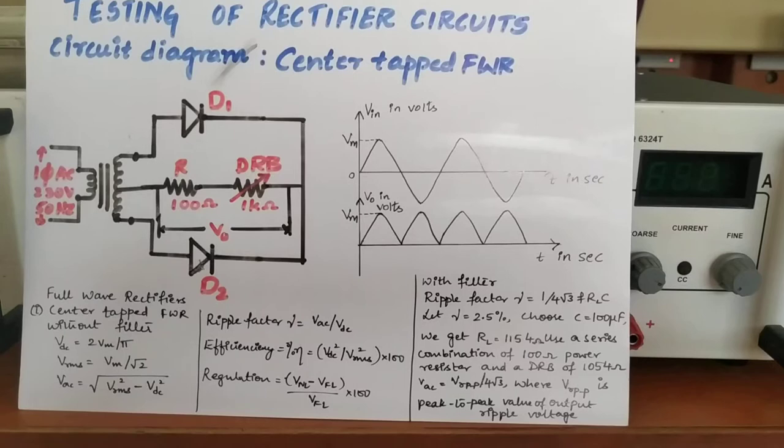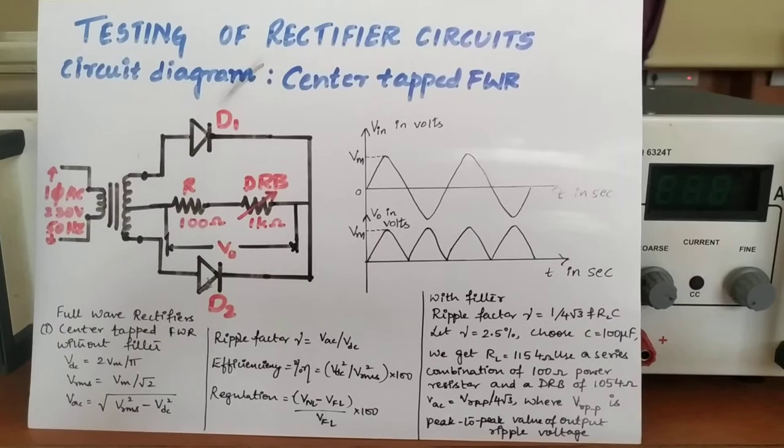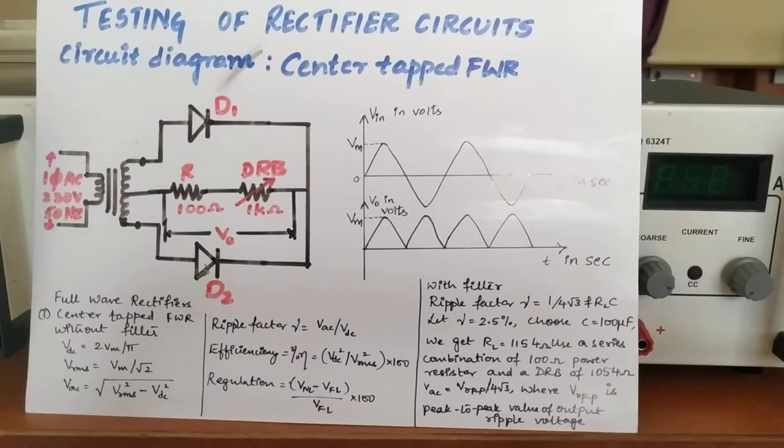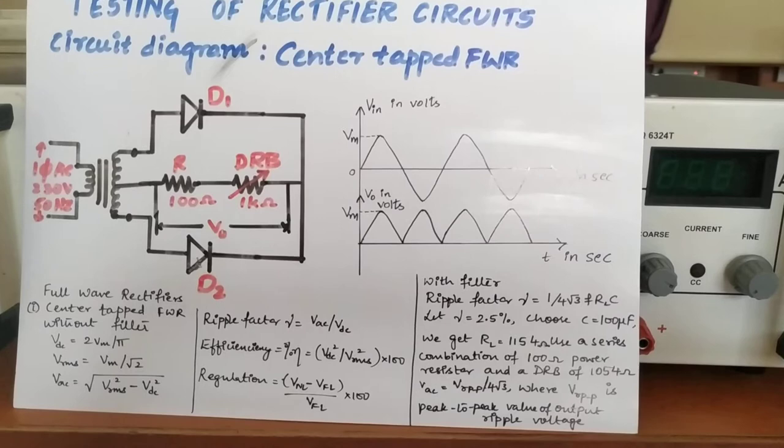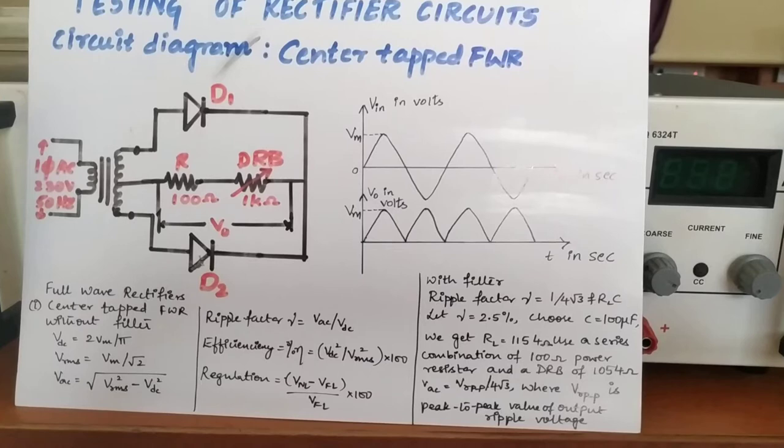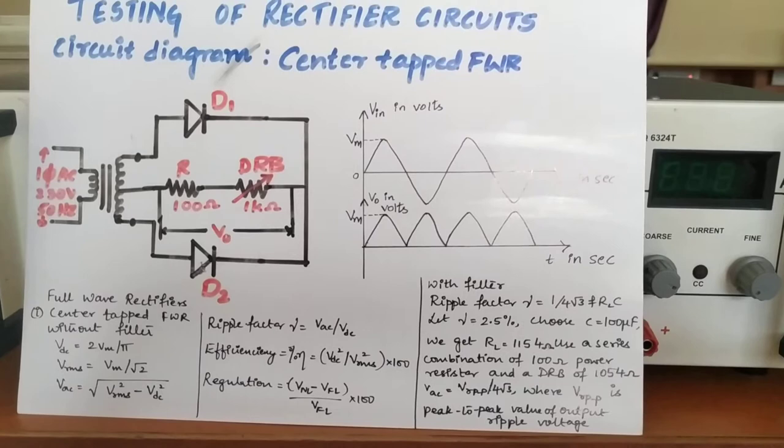The output of the rectifier is not pure DC. As I told you, in the full wave rectifier, efficiency is more because both half cycles will be rectified. Whatever output we get from the rectifier, it is pulsating DC — meaning pulses or ripple will be present in the output. To remove these pulses or ripple, we will be using filters.